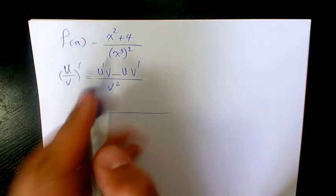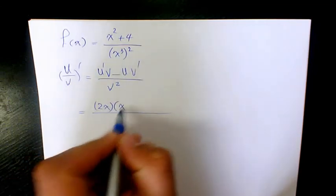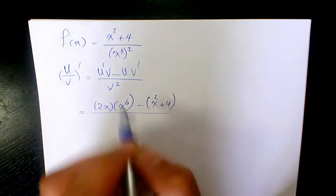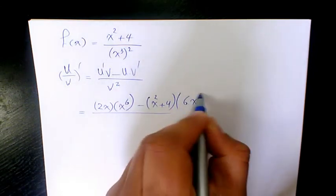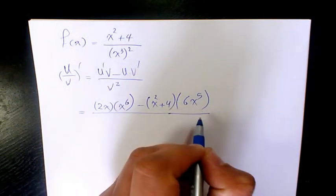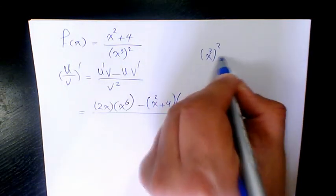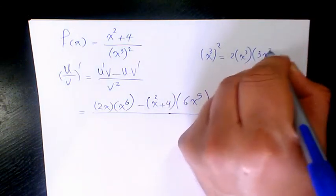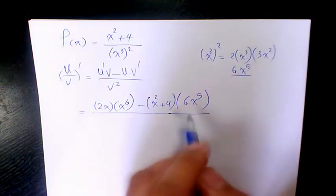So the derivative of the numerator is going to be 2x times the denominator, which is x cubed to the power of 2, giving us x to the power of 6. Minus the numerator, which is x squared plus 4, times the derivative of x to the power of 6, which is going to be 6x to the power of 5. You can use the chain rule for finding the derivative of x cubed to the power of 2: that's 2 times x cubed times the derivative of x cubed, which is 3x squared. So that gives 6x cubed times x squared, which is x to the power of 5 — the same result.